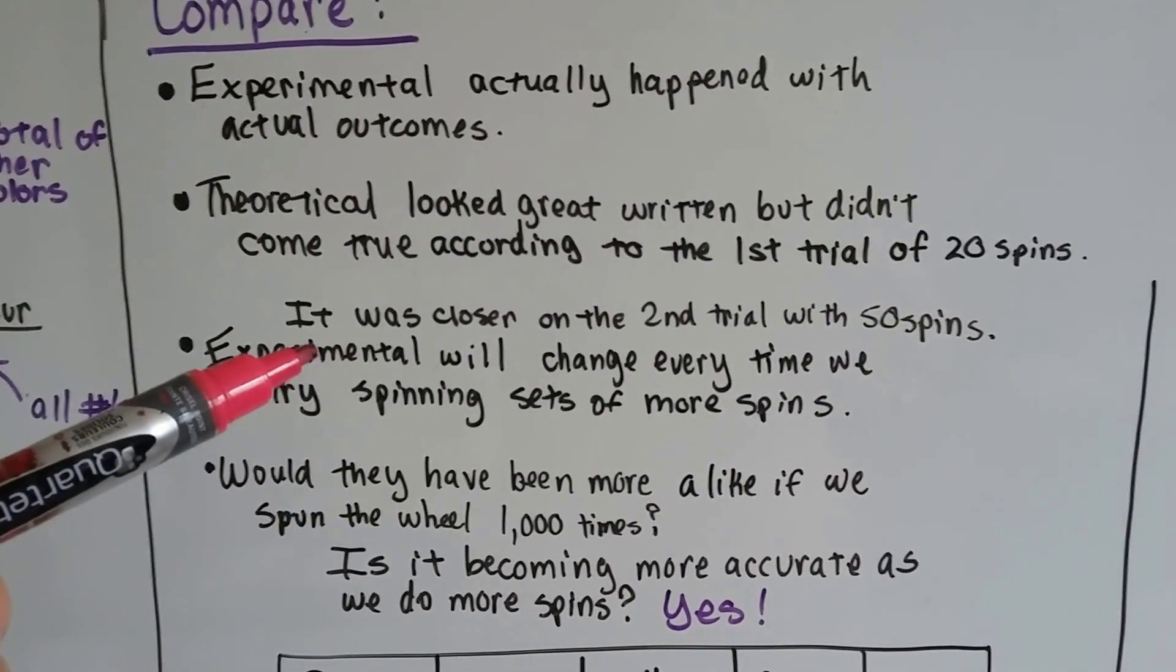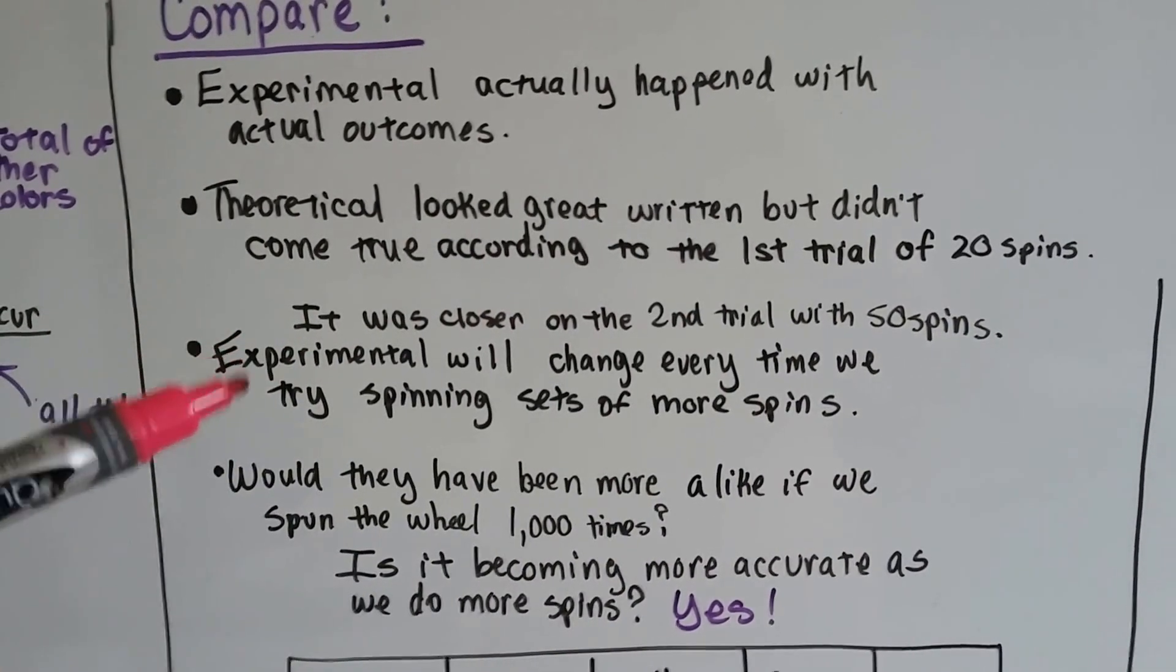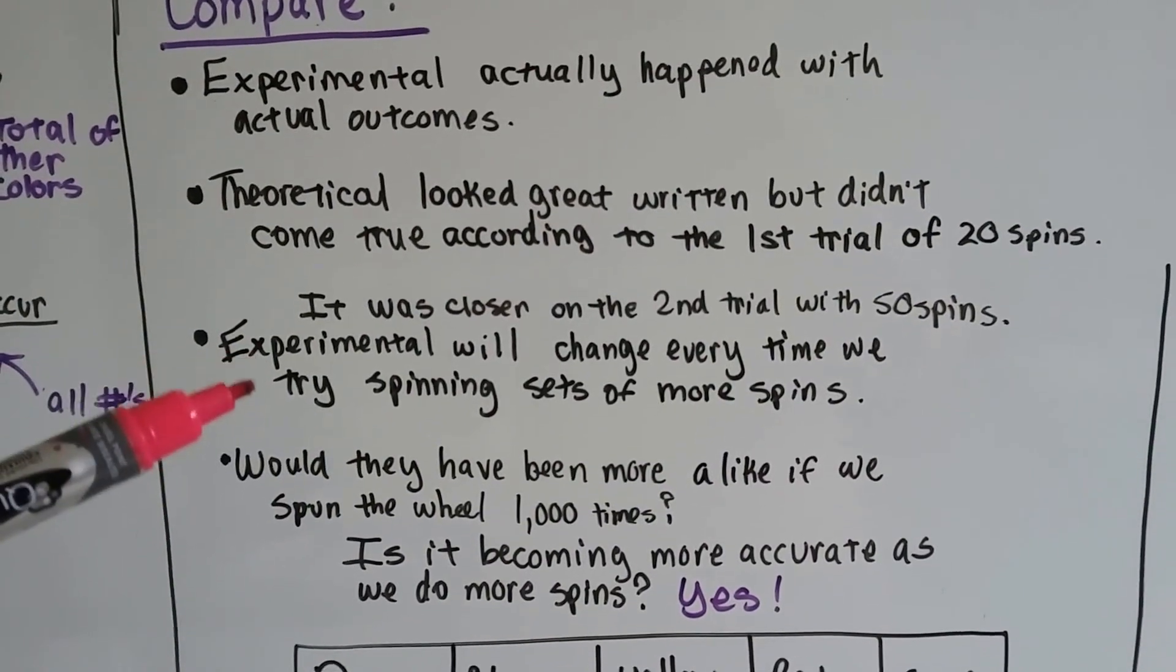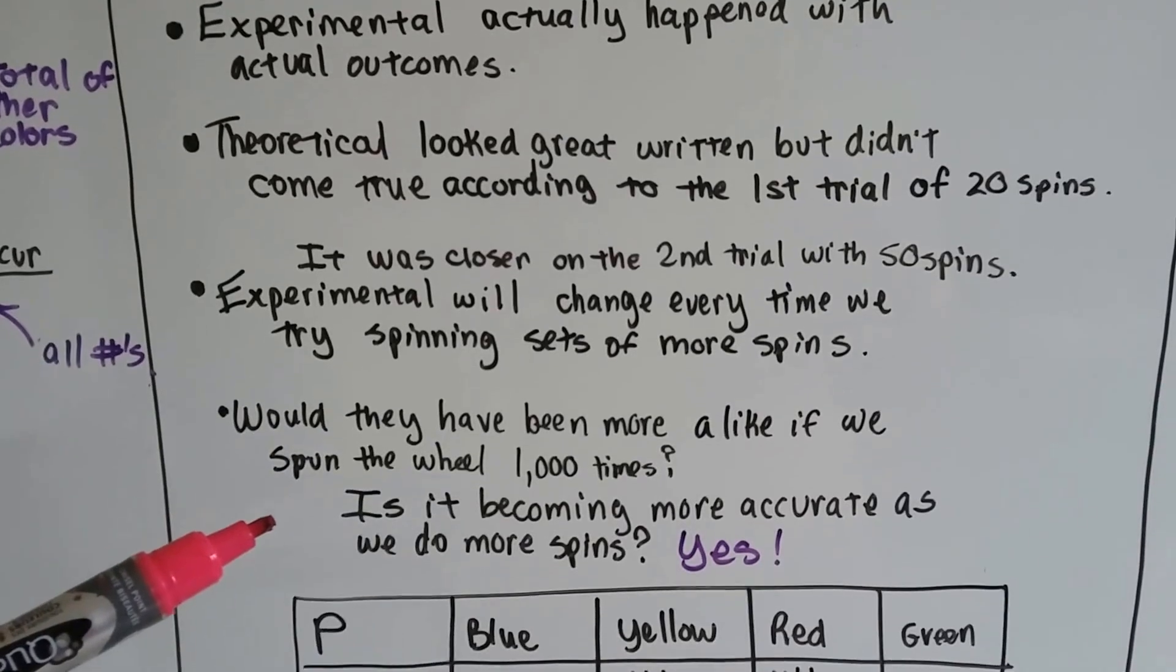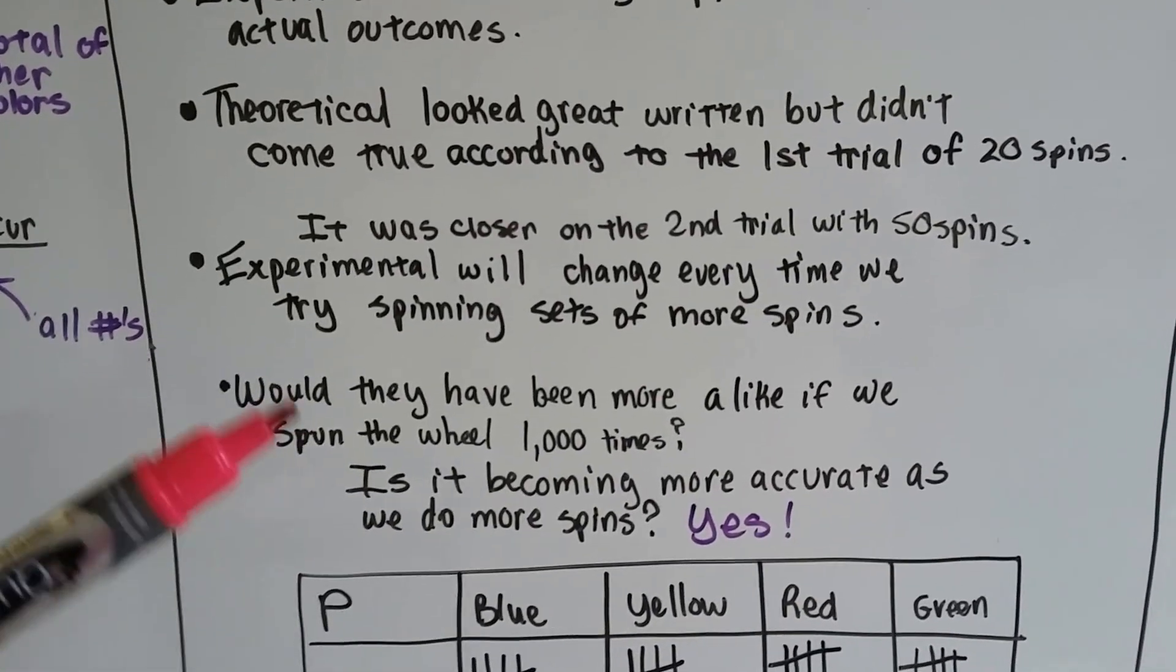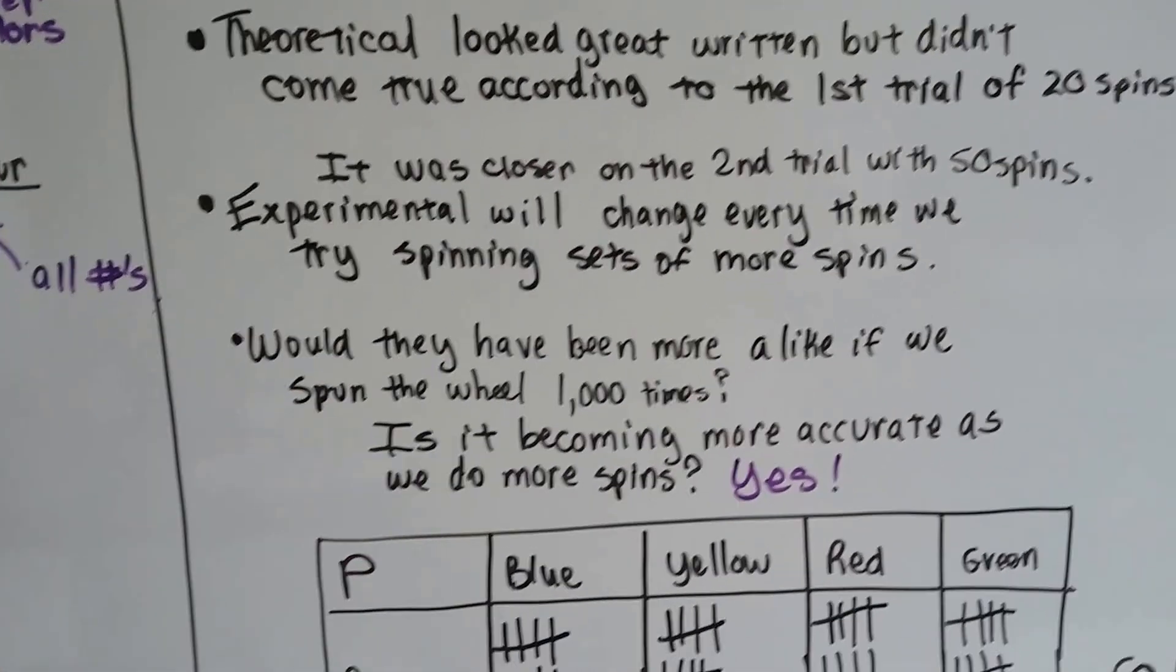The experimental probability will change every time we try spinning sets of more spins. So, would they have been more alike if we spun the wheel a thousand times? Is it becoming more accurate as we do more spins? Yes, it is.